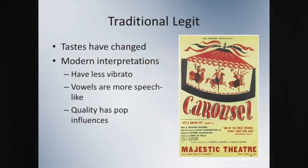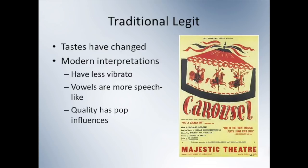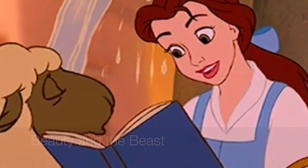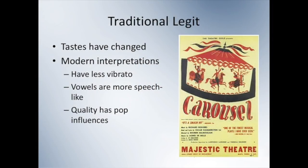It is important when talking about traditional legit songs to acknowledge that tastes have changed significantly in the last 15 years. It's no longer acceptable for a singer to audition with an operatic sound on a golden age song in the professional industry throughout the United States. Instead, casting directors are looking for a sound that has more pop-like qualities. A great example is Laura Osnes singing Cinderella. The quality of singers in a modern legit musical often have a lot in common with a Disney princess or Disney prince — less vibrato, more speech-like vowels, and some pop stylisms.